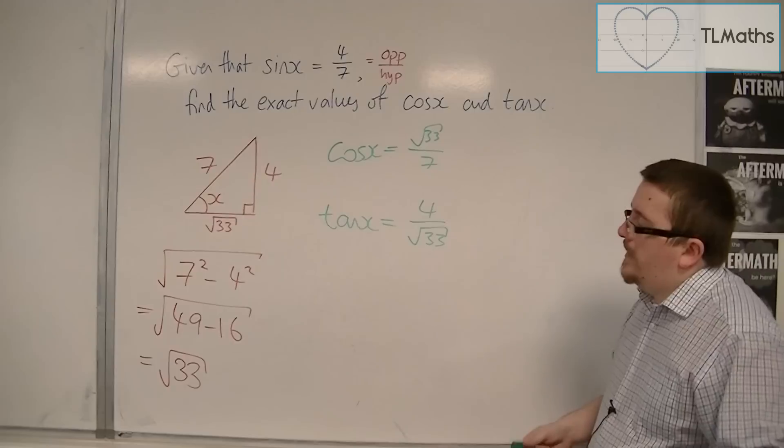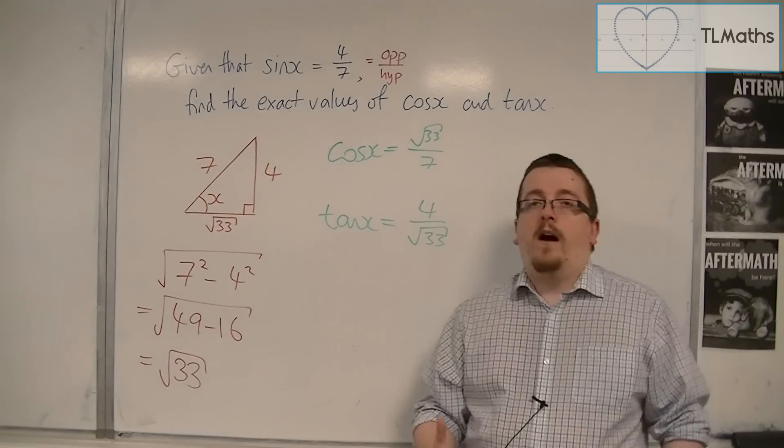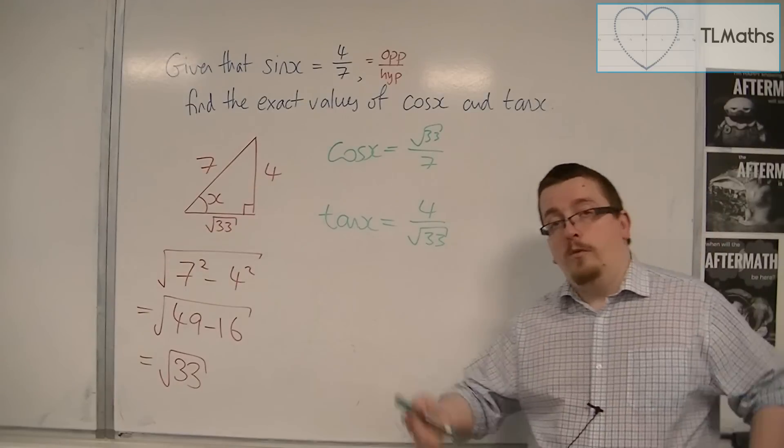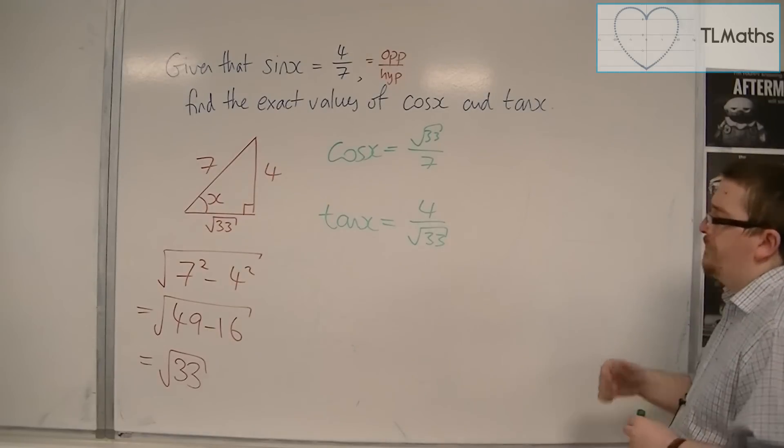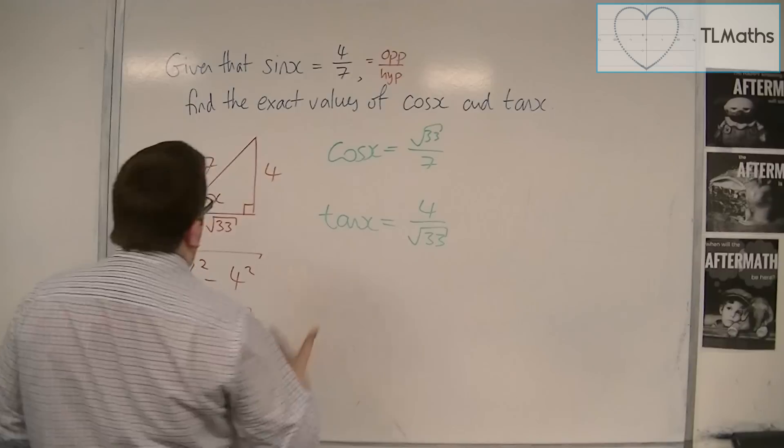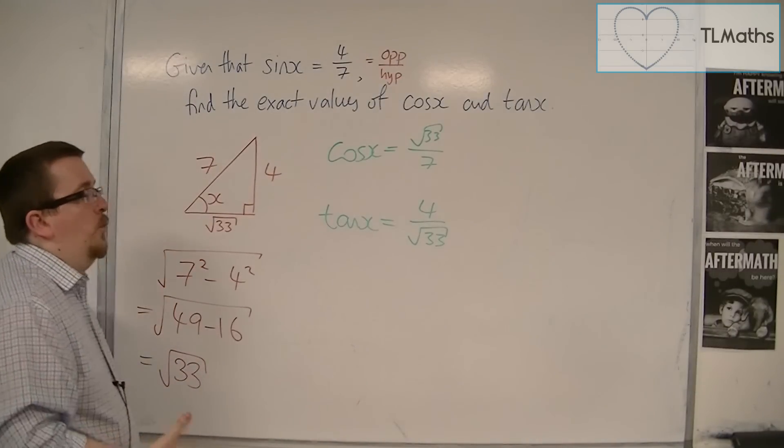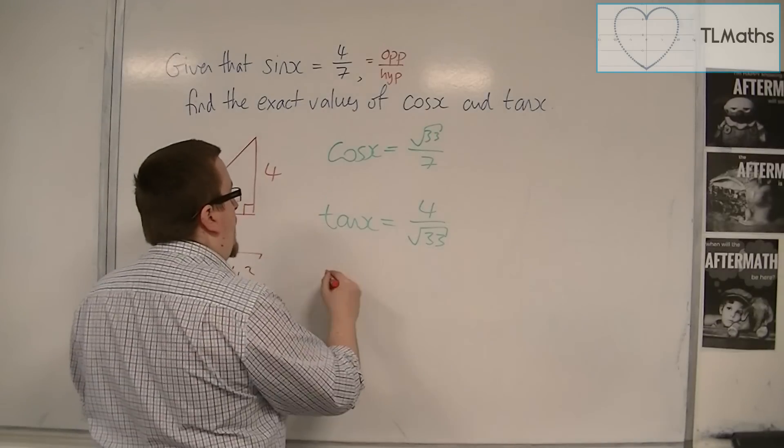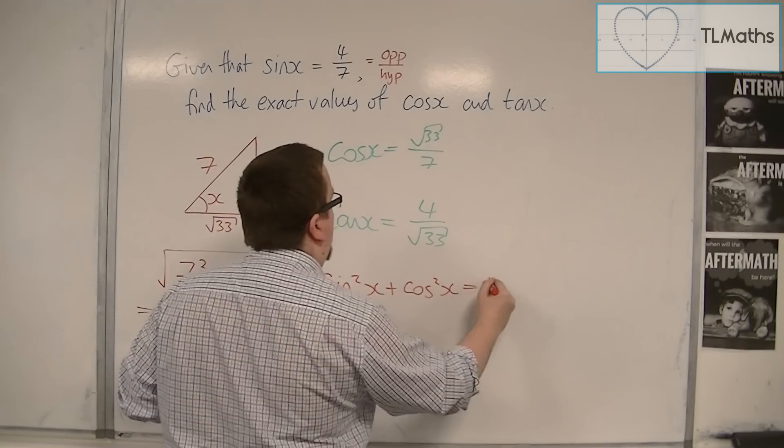And that comes from the fact that sine and cosine are periodic. It's to do with their graphs. And we'll be looking at the graphs later in this section. Also later in this section, from the unit circle, we get a trig identity, which says that sine squared x plus cos squared x equals 1.